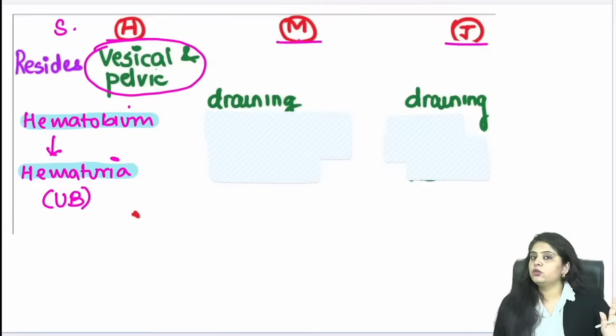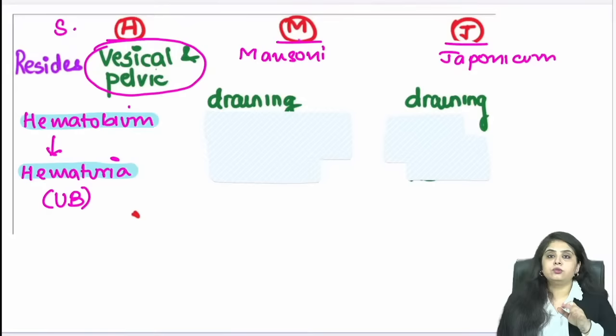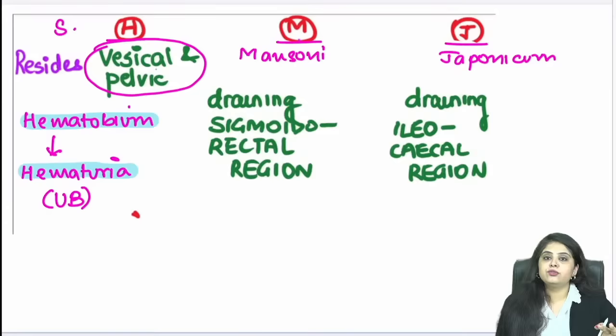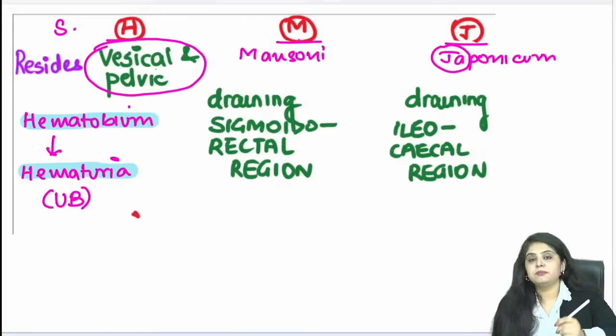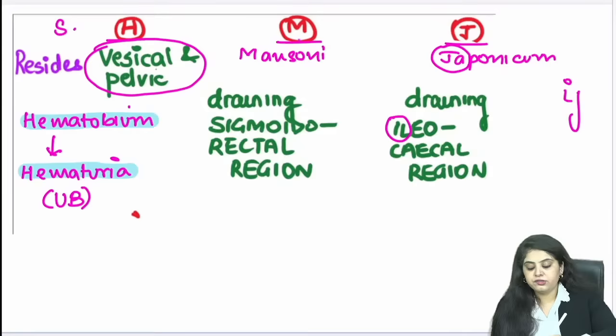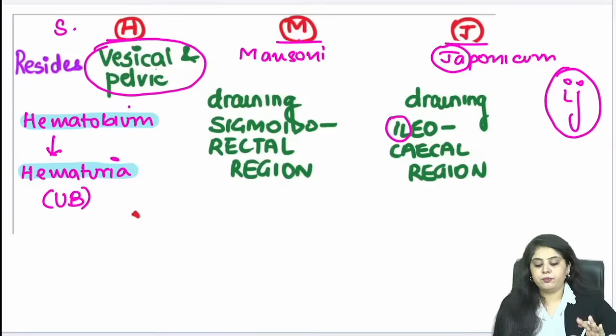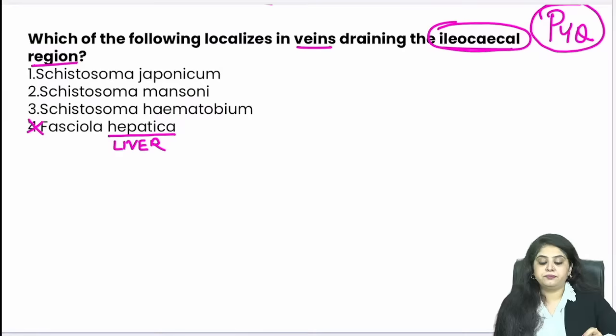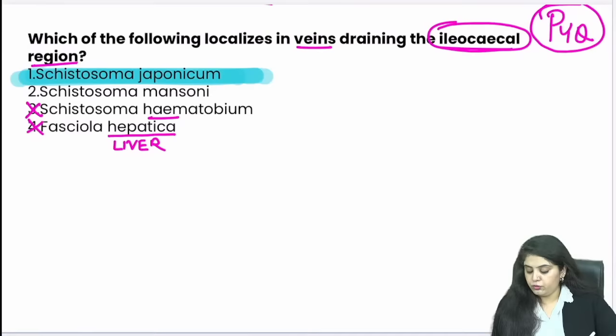Remaining: schistosoma mansoni and japonicum. One goes to the small intestine, one to the large intestine. Using alphabet order: ileocecal (small intestine) — I comes closest to J. So ileocecal → japonicum. The larger intestine (sigmoidorectal region) → mansoni. This is a ratta/fact-based previous-year question.